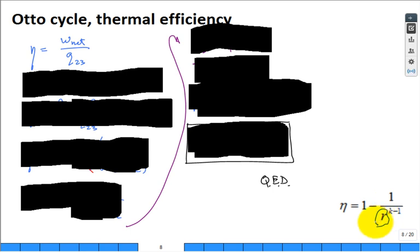And this equation, it may not be easy to see, but as R goes up, the thermal efficiency goes up. You want a high compression ratio engine. It's good for thermal performance.